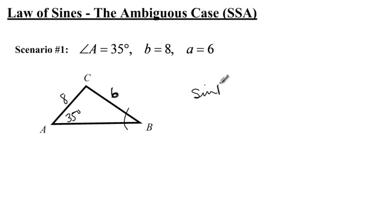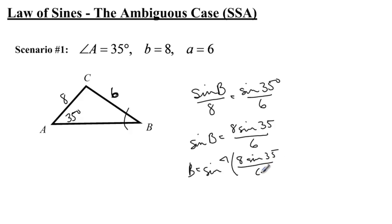So I'm going to say sine of B over 8 equals sine of 35 over 6. I'm going to multiply both sides by 8, so I get sine of B equals 8 sine 35 over 6. To get B by itself, I do the sine inverse, so B equals the sine inverse of 8 sine 35 over 6. Now when I plug that into my calculator, I get B equals about 50 degrees, rounded to the nearest whole number.